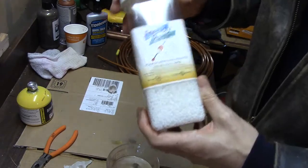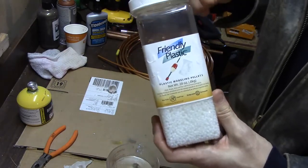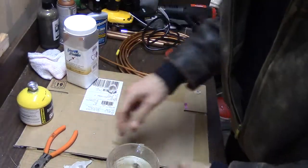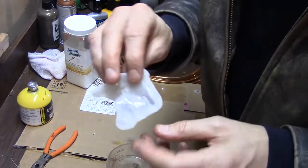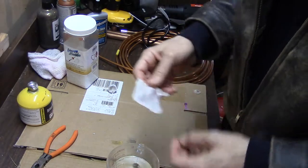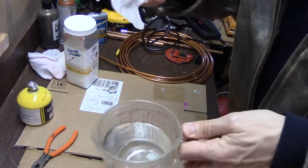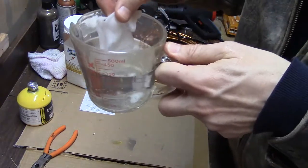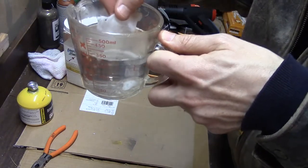InstaMorph is another brand. I use Friendly Plastic, kind of expensive, but you can mix it up. It melts at low temperature. Here's water and you'll see it turns clear. You put those little pellets in and you see how it's clear.